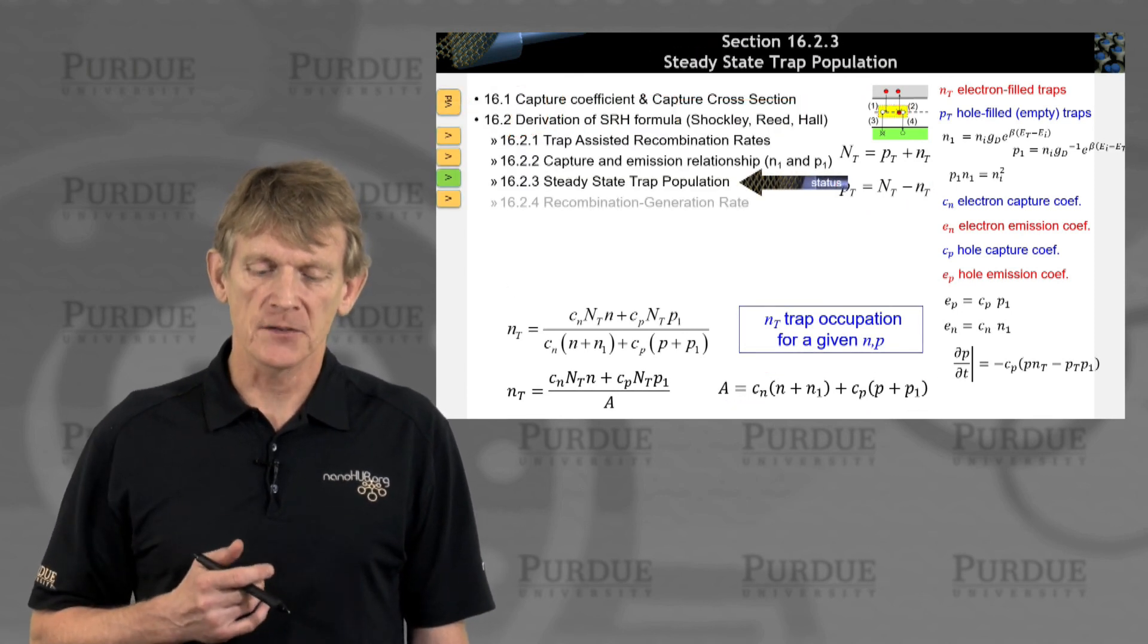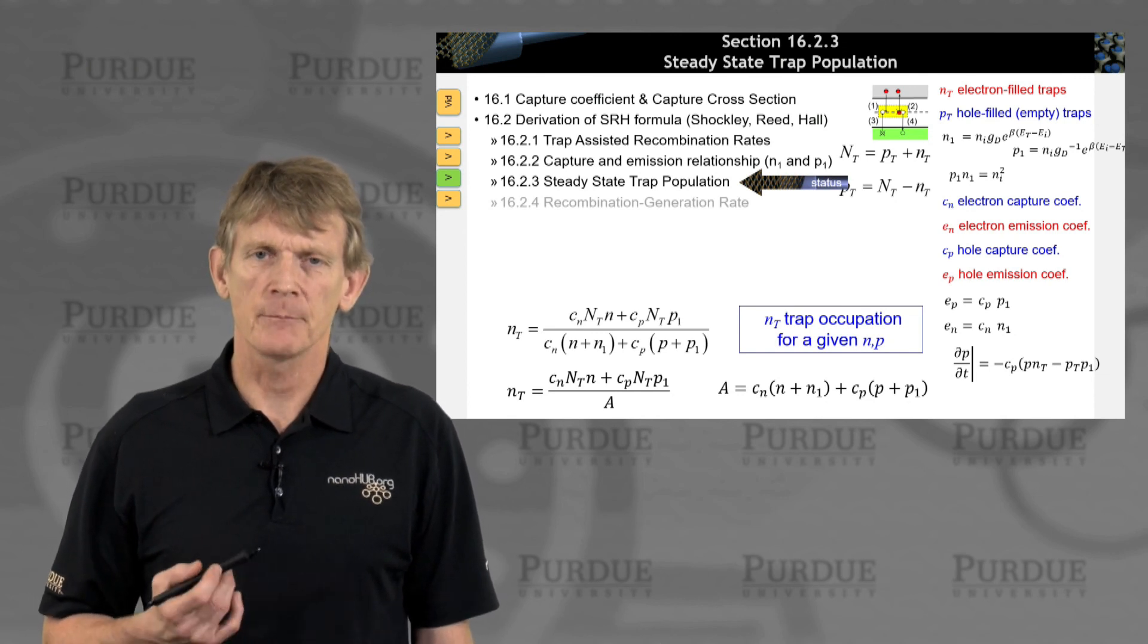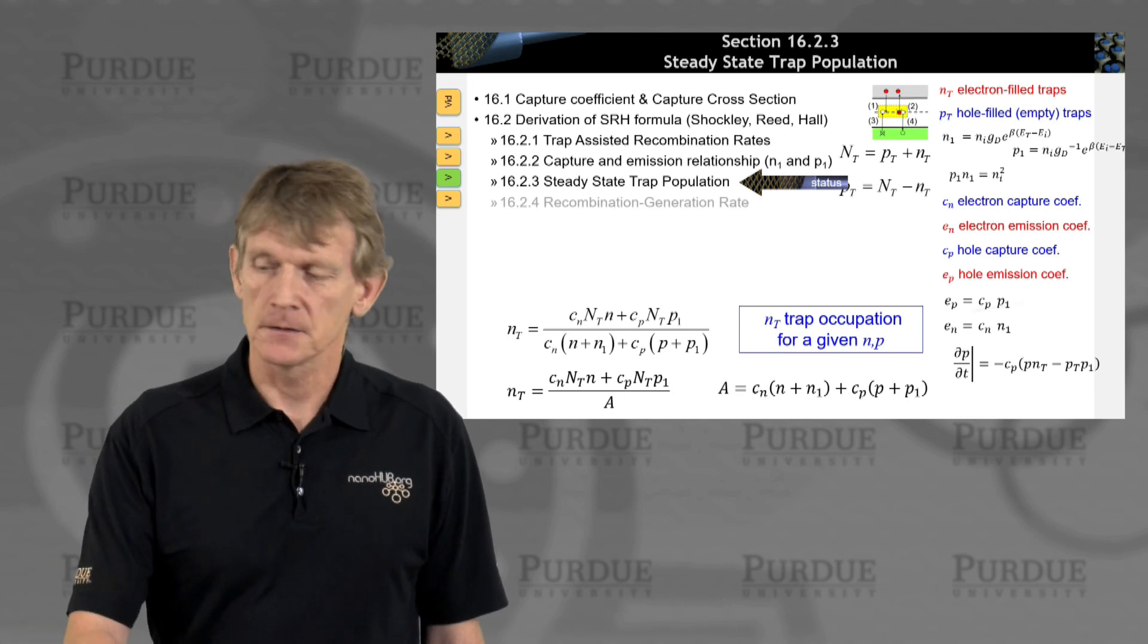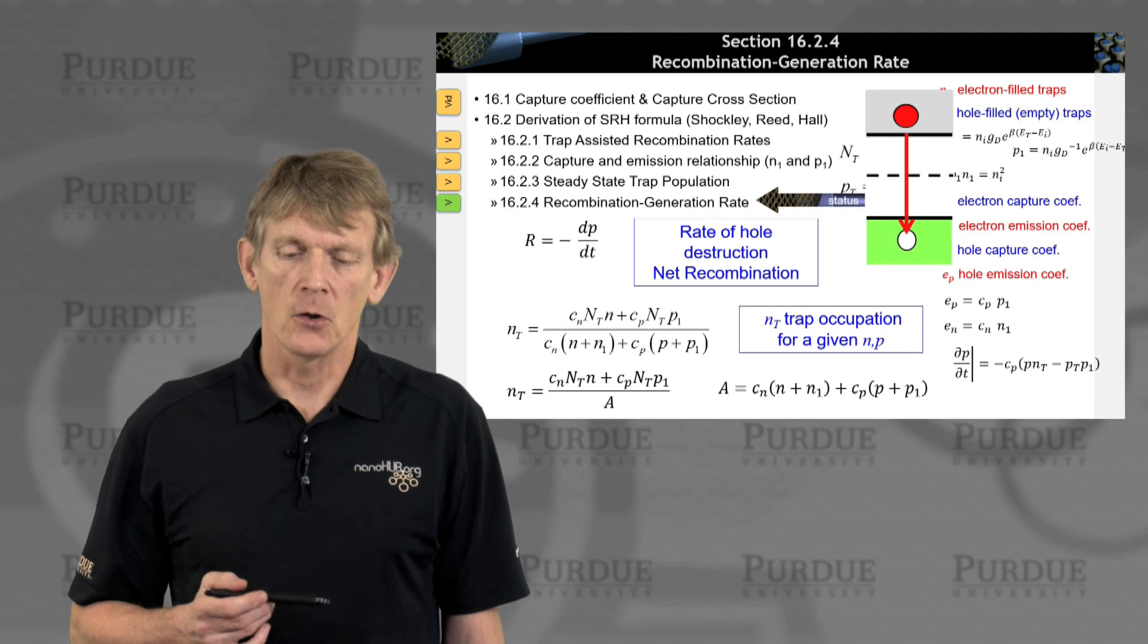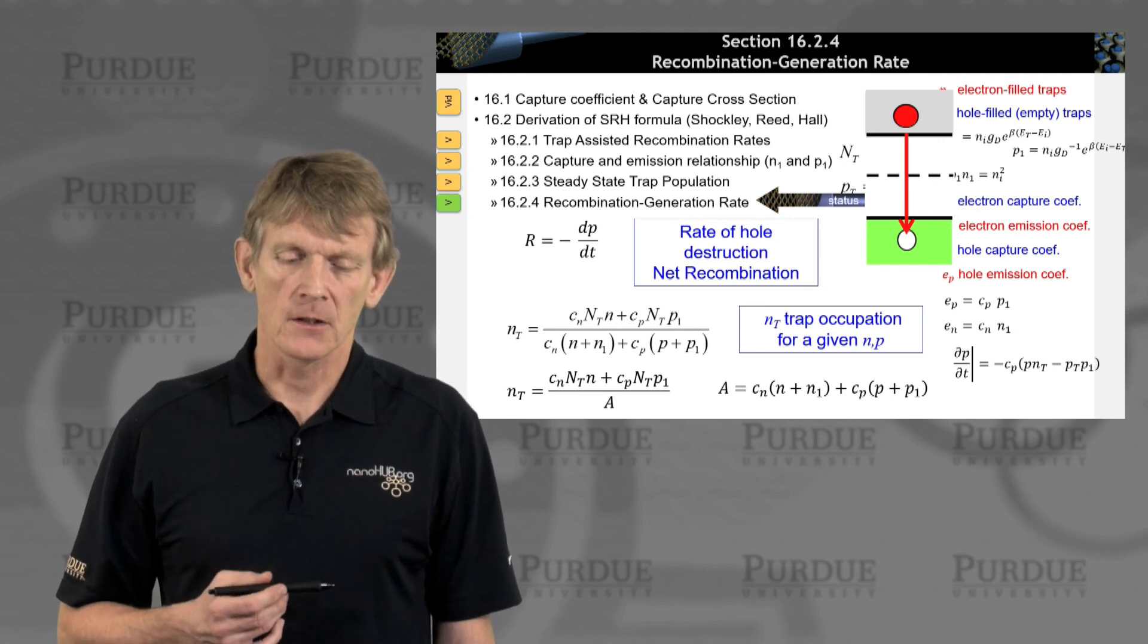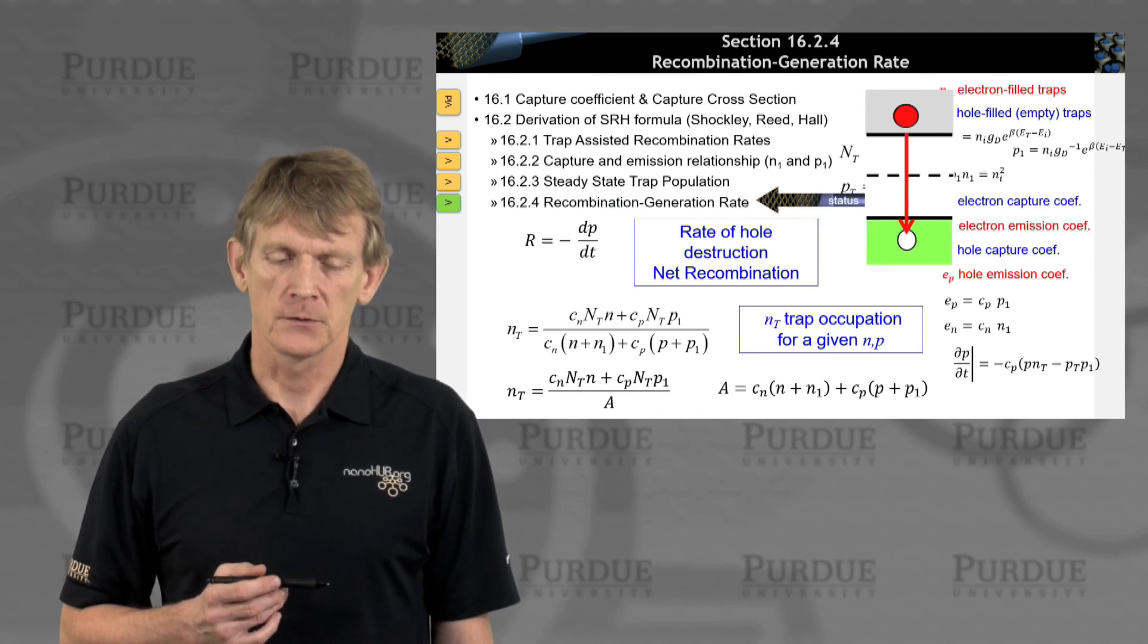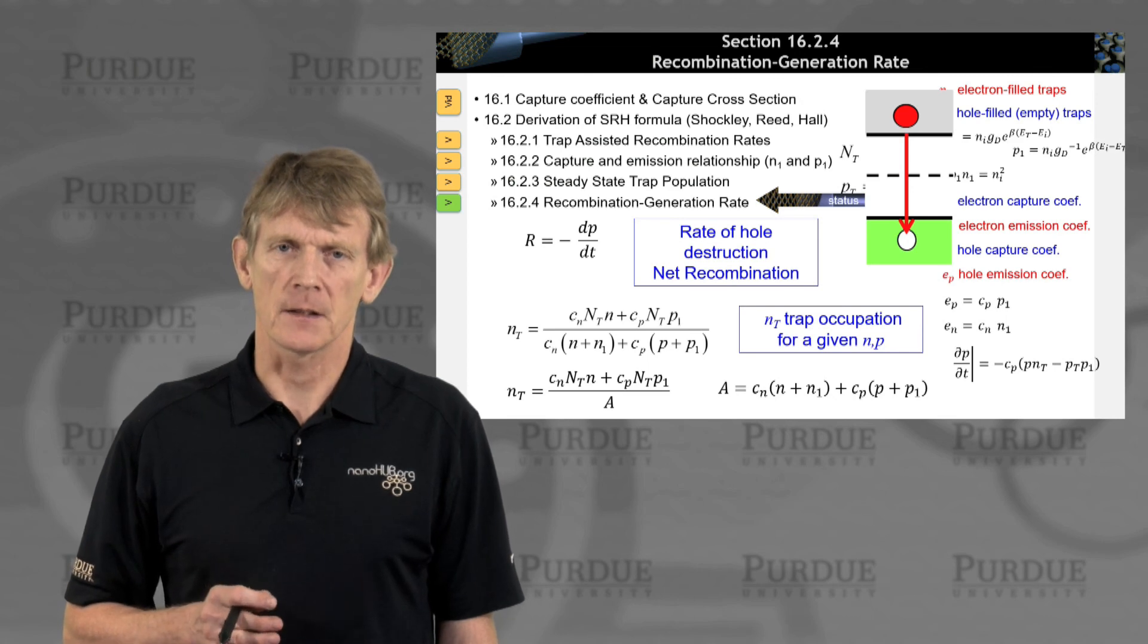We have an expression for the trap occupation, trap population in steady state. What we're going to do next is actually calculate the overall rate for electrons to be destroyed. Actually, we'll calculate the hole destruction, meaning electron hopping all the way down to destroy a hole. That's going to be in the next segment.